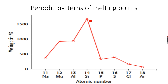Then the melting point drops all the way to phosphorus, because phosphorus, sulfur, chlorine and argon have simple molecular structures. They have Van der Waals forces between the molecules, and these Van der Waals forces are not so difficult to break. So less energy is needed, and therefore phosphorus, sulfur, chlorine and argon have lower melting points. Sulfur has a higher melting point than phosphorus because...